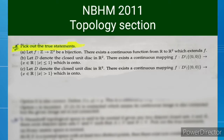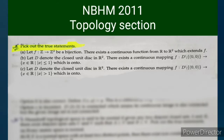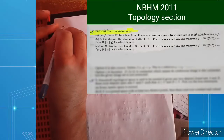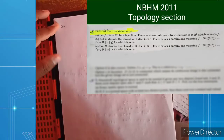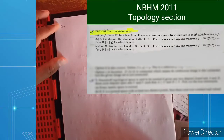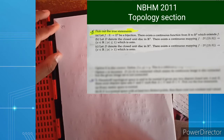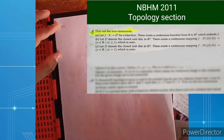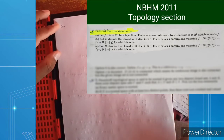Hello everyone. Today we will discuss a topological problem. The first statement is: let f from Z to Z² be a bijection. Does there exist a continuous function from R to R² which extends f? Yes, this is true by the Tietze extension theorem.